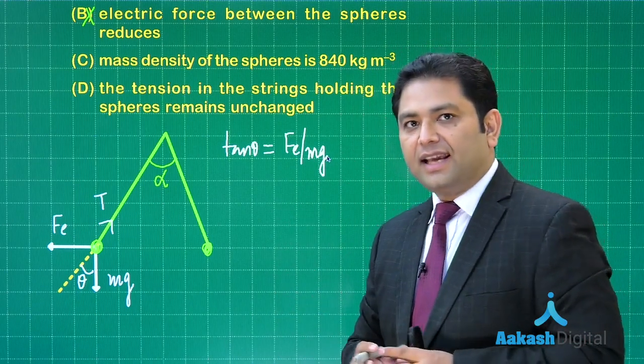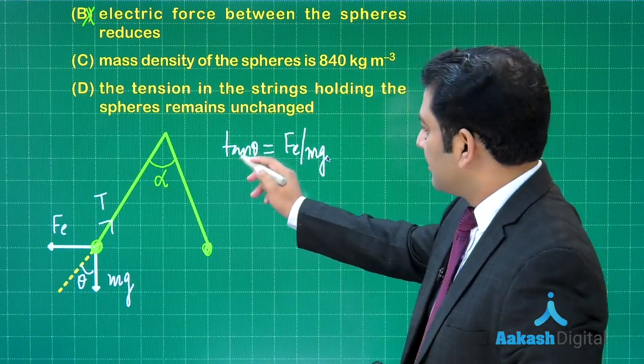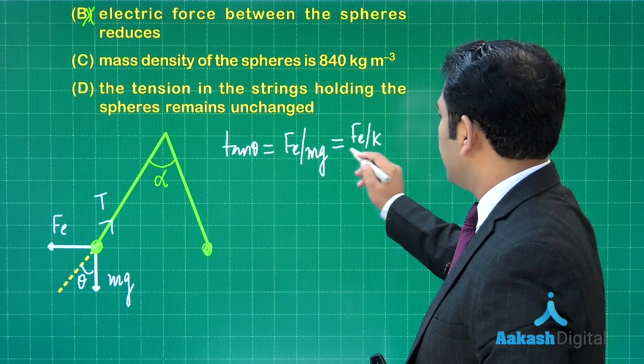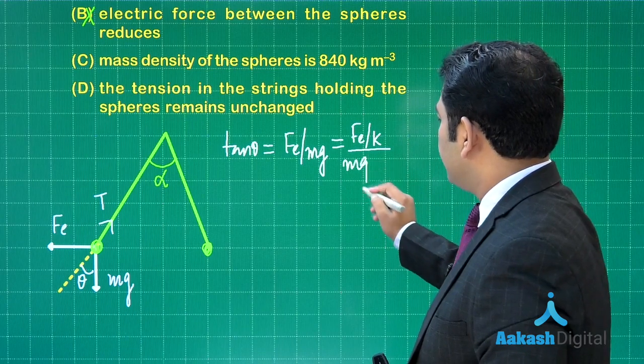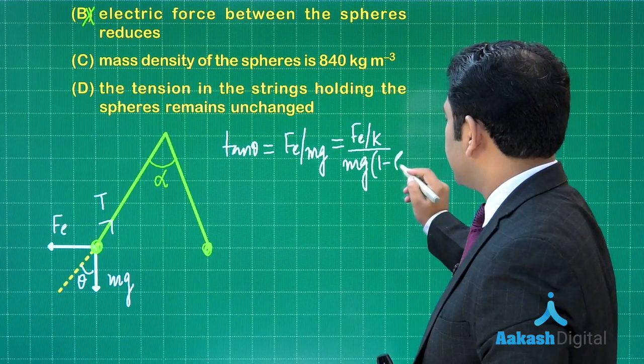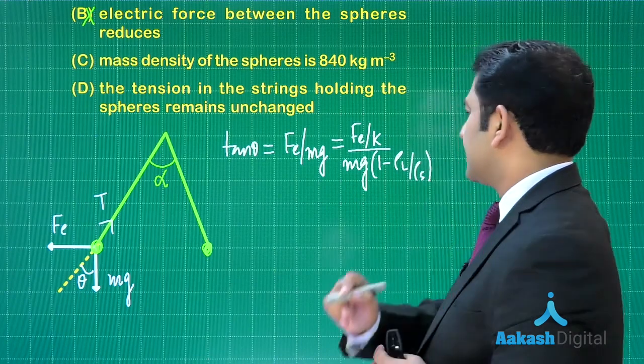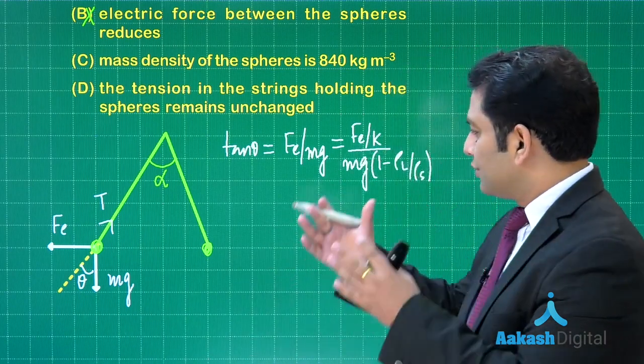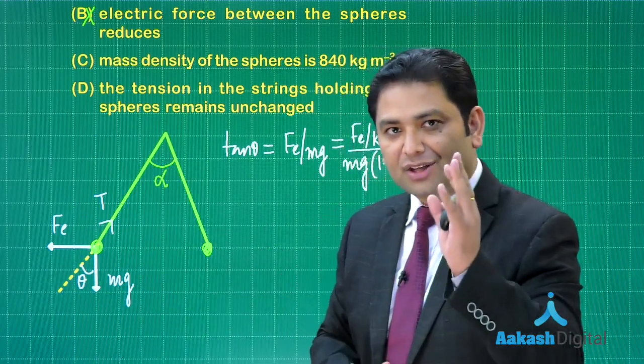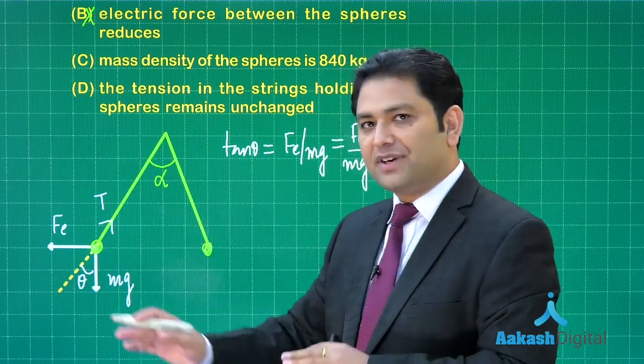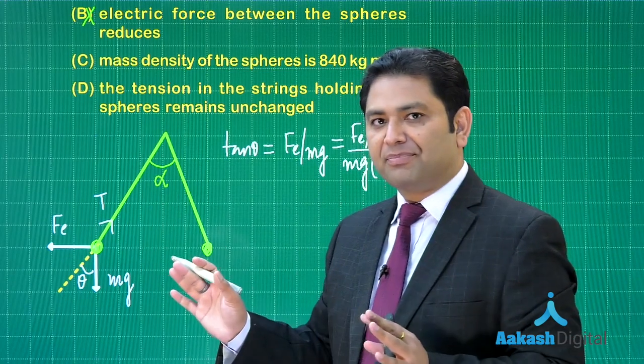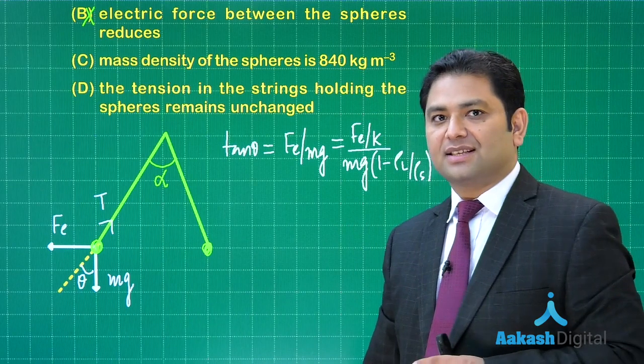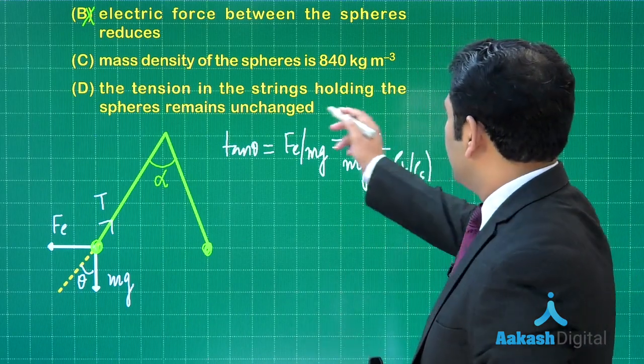Tan of theta equals Fe by mg—that's the first condition. In the second condition, theta is the same, so I can relate it to Fe by k upon mg times (1 minus density of liquid by density of solid). The electrostatic net force will reduce, but the force between the spheres will still remain the same. This includes both gravity and upthrust.